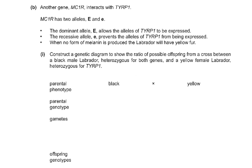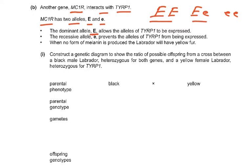Another gene, MC1R, interacts with TYRP1. MC1R has two alleles: big E and small E. So possibilities are big E big E, big E small E, and small E small E. The dominant E allows the allele of TYRP1 to be expressed. So if big E is present and the B alleles are present, it will be expressed. The recessive allele, small E small E, prevents TYRP1 from being expressed. When no form of melanin is produced, the Labrador will have yellow fur.